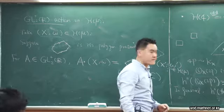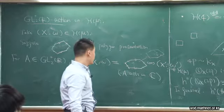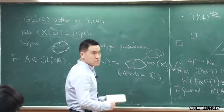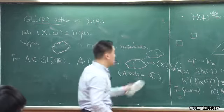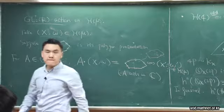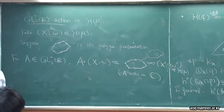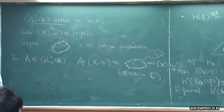So A is acting on the whole Hodge bundle, but not fiber-wise. The action of SO₂ preserves the area. But GL₂ can enlarge the area — larger or smaller. You can also pick an element in SL₂.